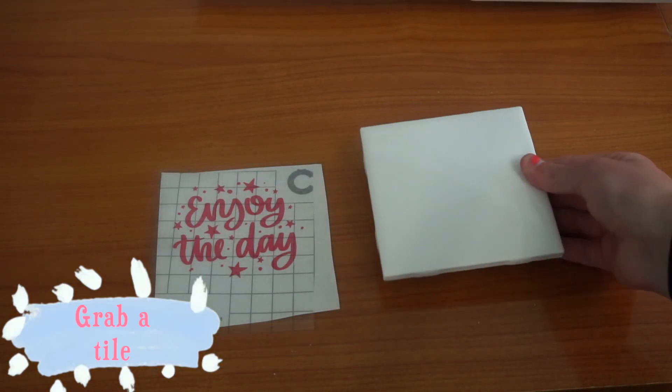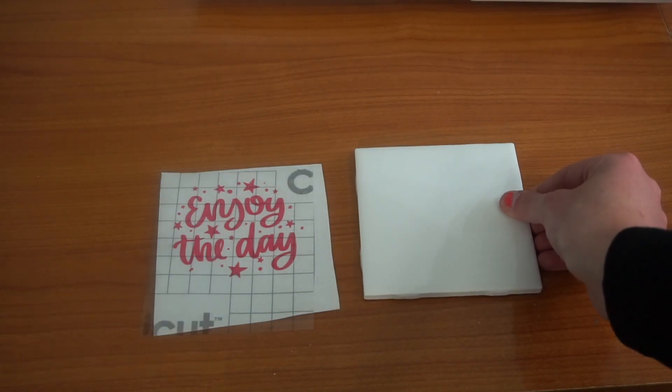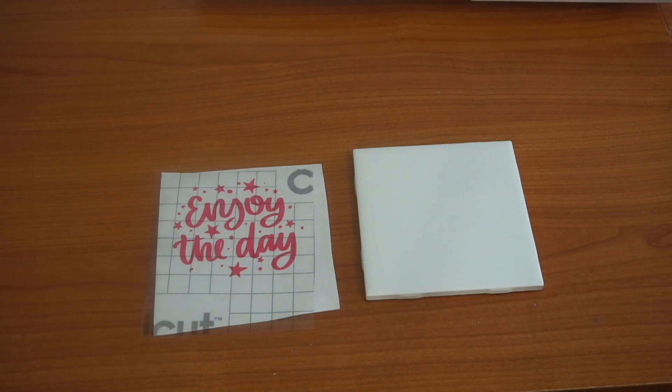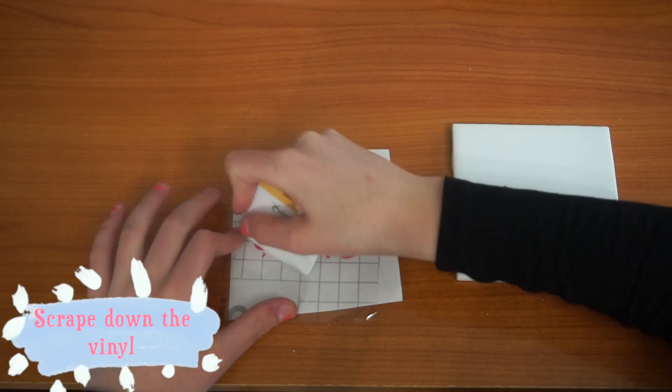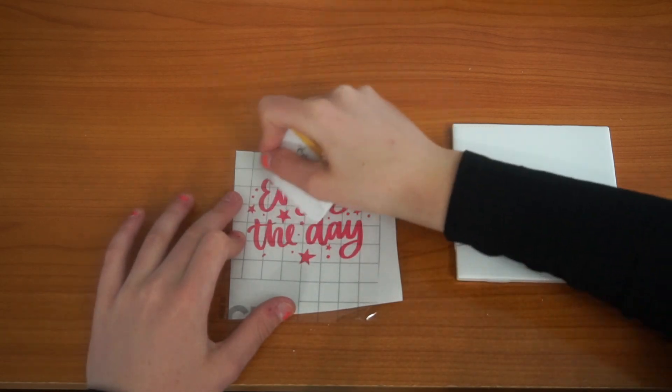Grab a tile. I got this tile from Home Depot. Make sure each piece of the image goes onto the clear contact paper.